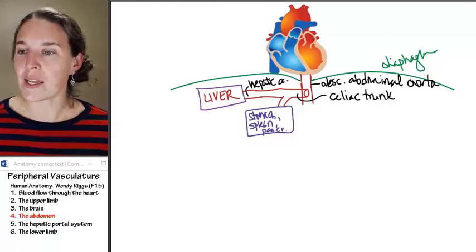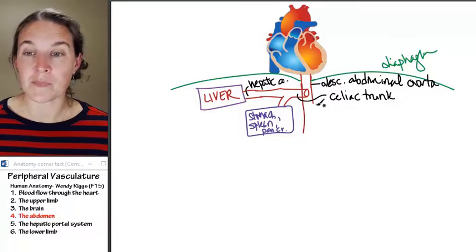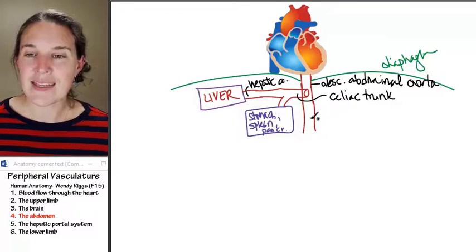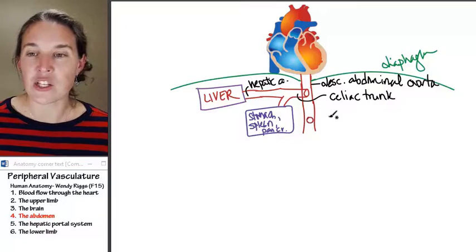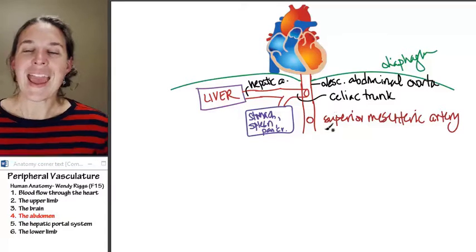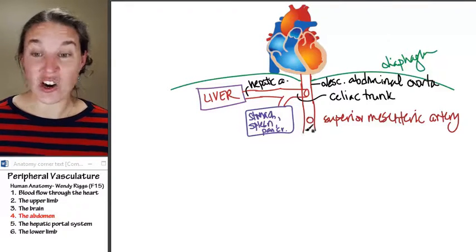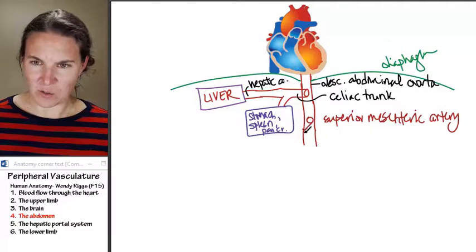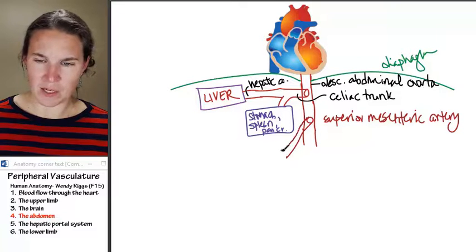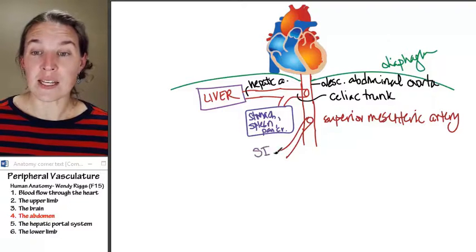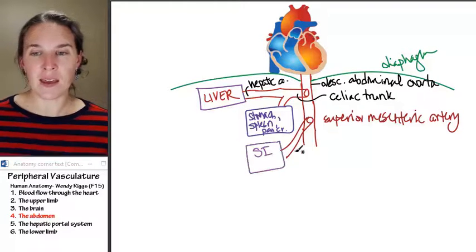Branch number two, we can go back to our red color. Branch number two happens just inferior to the celiac trunk, and this guy is called the superior mesenteric artery. And once again, the superior mesenteric artery is going to have lots of branches. I'm sort of not having very much room here, but I'm going to draw it, and I'm going to tell you that it feeds mostly the small intestines.